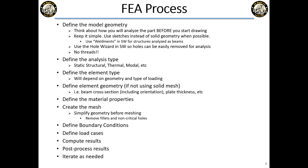Once you make your geometry, you define the analysis type — static, thermal, normal, dynamic, etc. Then you assign what type of elements you're going to use. Then you define the element geometry: if you're not using solid mesh, you tell it the beam cross-section including orientation. In other software, you literally just give it area and moment of inertia — it doesn't need to know if it's an I-beam or square, just A and I. You also have to give it the orientation vector.